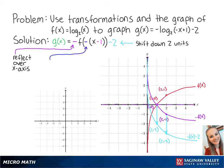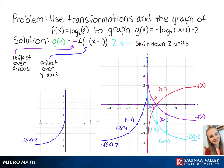The negative x means that we will reflect the new graph over the y-axis. So our new points are at negative 1, negative 2 and negative 2, negative 3. Connecting these points, we get the graph of negative f of negative x minus 2.